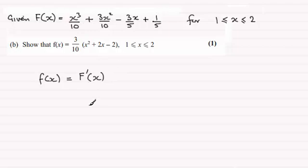So if we take each of these terms in turn, the differential of X cubed, that's going to be 3X squared, and then that's divided by 10. And then differential of this term here, if we differentiate 3X squared, that's going to be 6X divided by the 10, so you're going to get 6X over 10. And then differential of minus 3 fifths X is just minus 3 fifths, and the differential of a fifth is going to be 0.